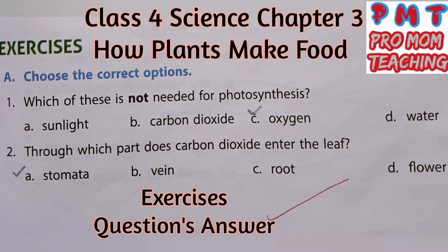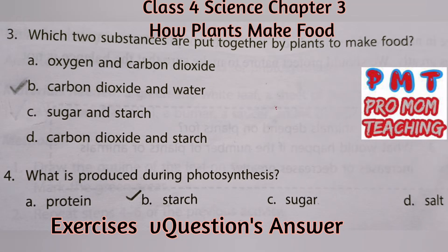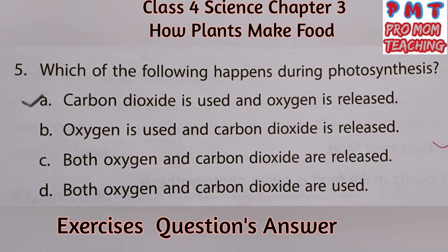Choose the correct options. First, which of these is not needed for photosynthesis? Answer: Tick C – oxygen. Second, which of these are not needed? Answer: Tick A – stomata. Third, which of these two substances are put together by plants to make food? Answer: Tick B – carbon dioxide and water. Fourth, what is produced during photosynthesis? Answer: Tick B – stomata. Fifth, which of the following happens during photosynthesis? Answer: Tick A – carbon dioxide is used and oxygen is released.